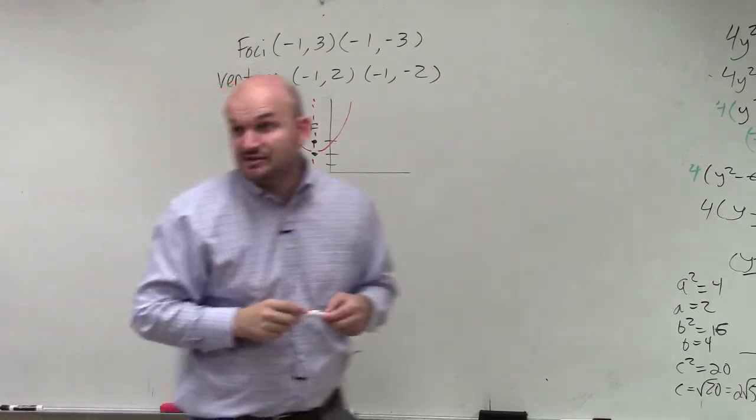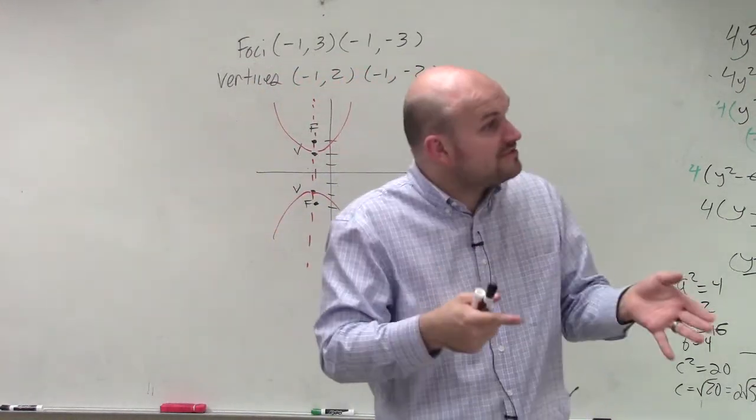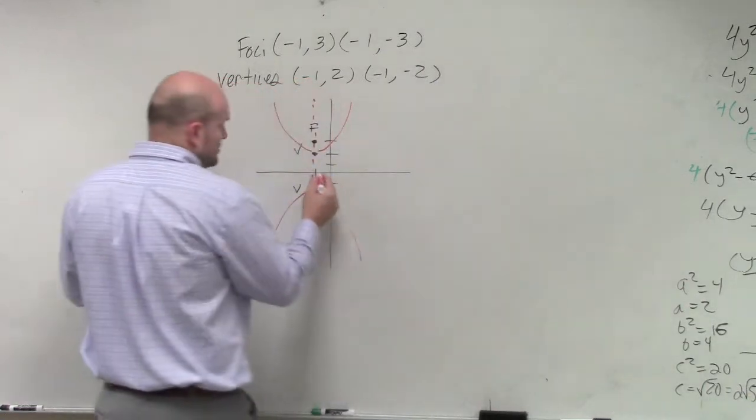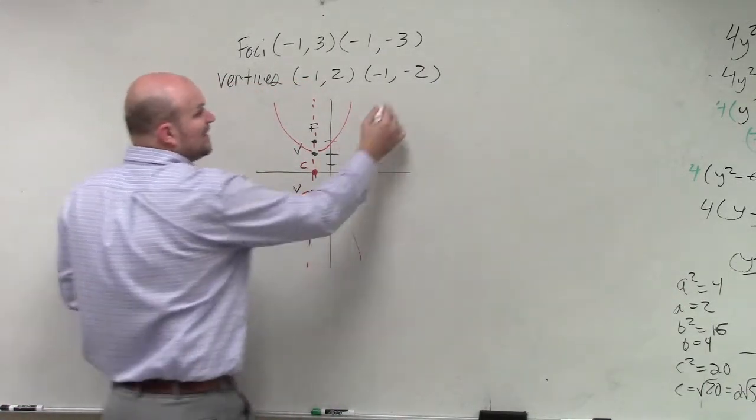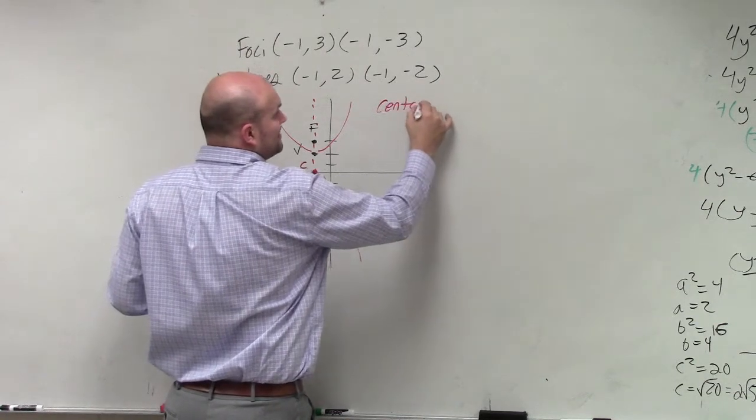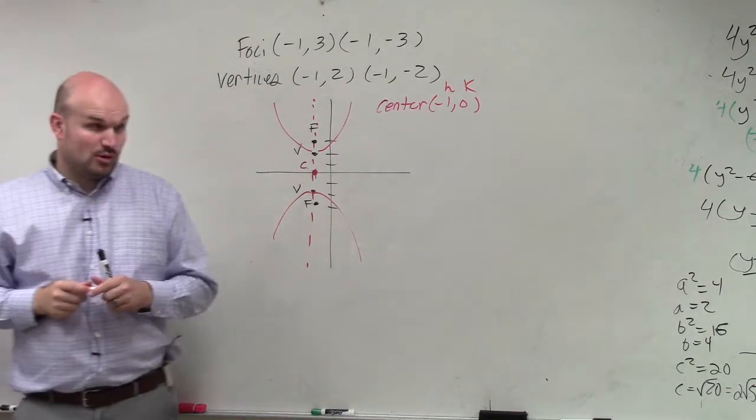It also tells me where my center is, right? Because my center is halfway in between my vertices. It's also halfway between my foci, right? So it's at negative 1, 0. And I'll write that down because I'm going to need that because that is my h and my k, correct? That's important.